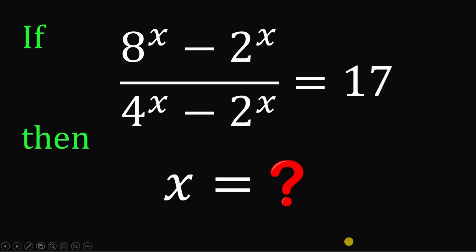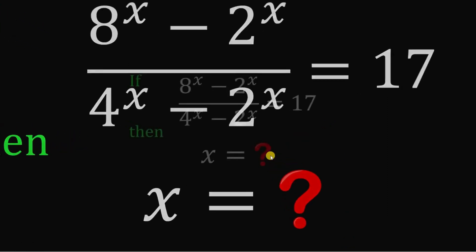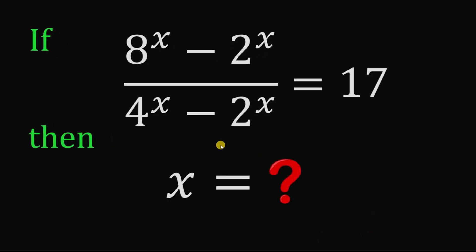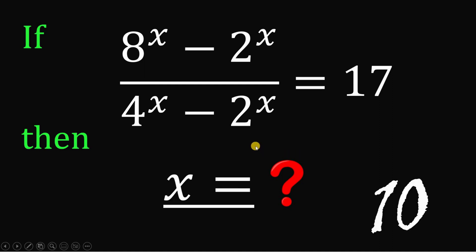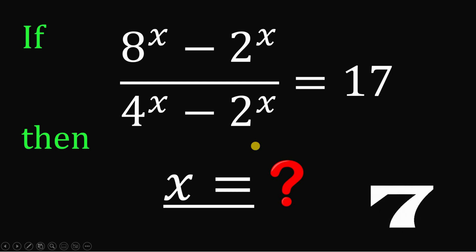Can you solve this math challenge? Here's the question: If 8 raised to x minus 2 raised to x, all over 4 raised to x minus 2 raised to x, equals 17, then our goal is to find the value of x. You can pause this video if you want to give this problem a try.